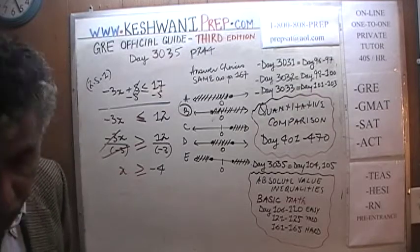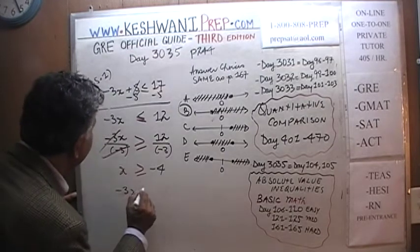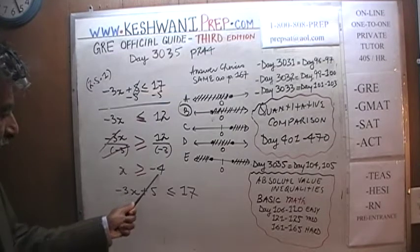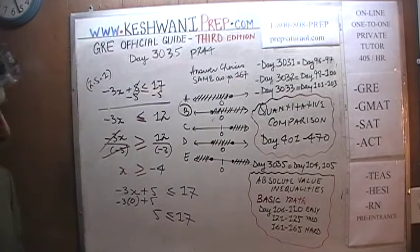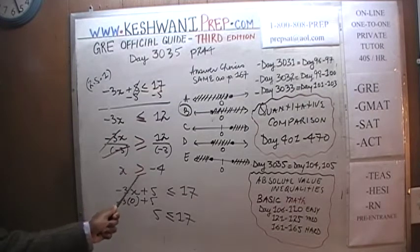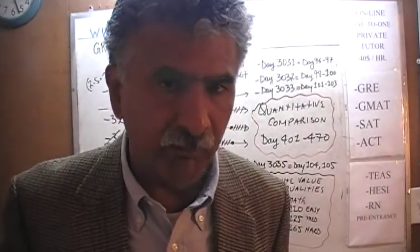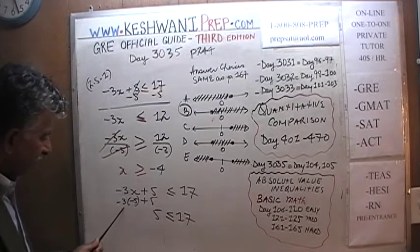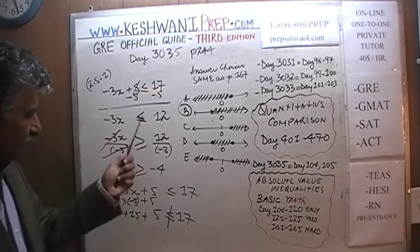We can quickly verify it. We are told x has to be greater than or equal to negative 4. Let's put in 0 — 0 should work because 0 is more than negative 4. Negative 3 times 0 plus 5 is just 5, and 5 is indeed less than or equal to 17. Similarly, if we put in negative 5 — since x must be greater than or equal to negative 4, negative 5 should not work. Negative 5 times negative 3 is positive 15, plus 5 is 20, and 20 is not less than 17. Verified. The answer to this problem was B.